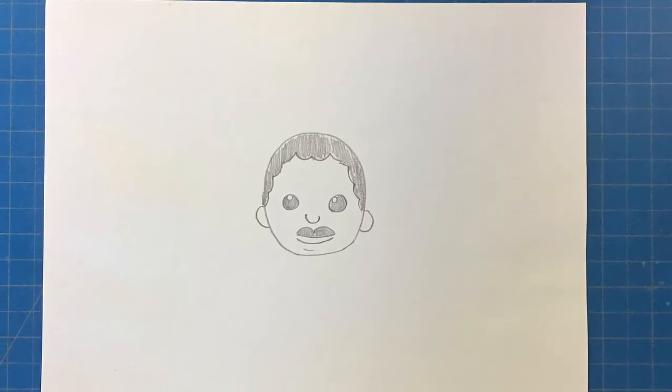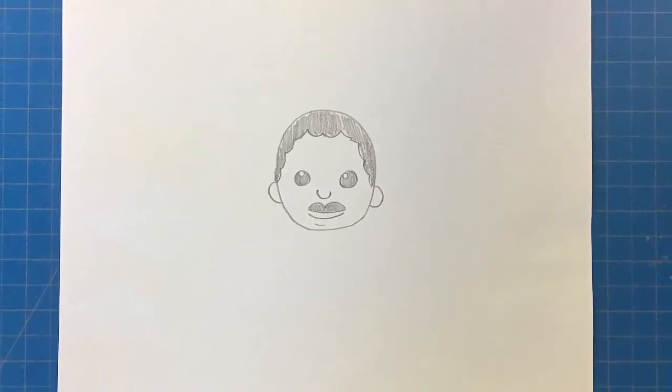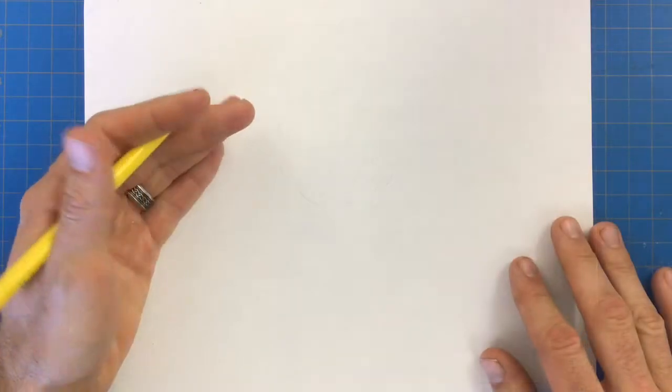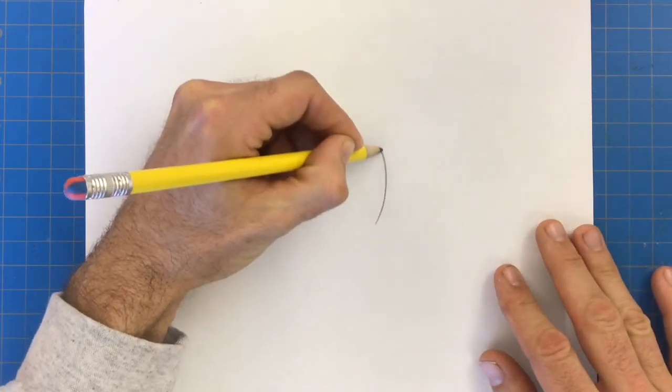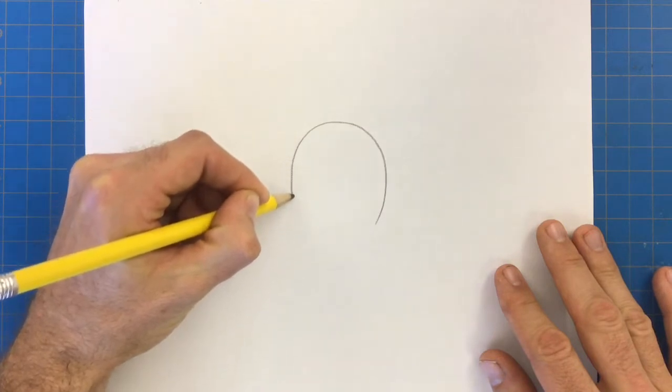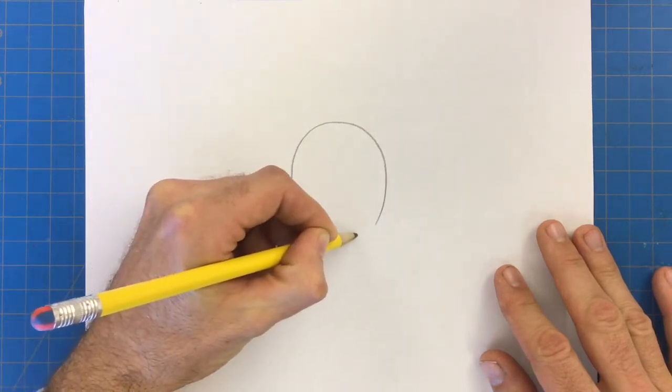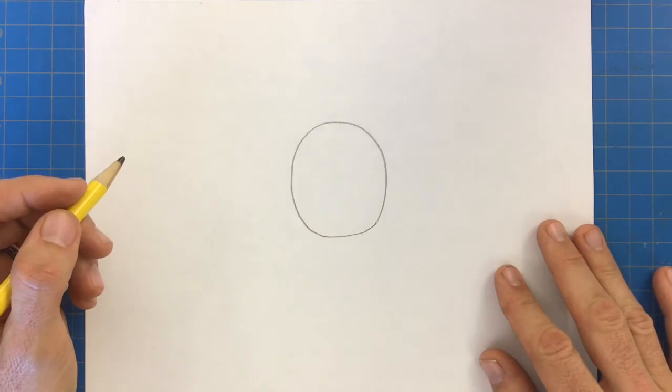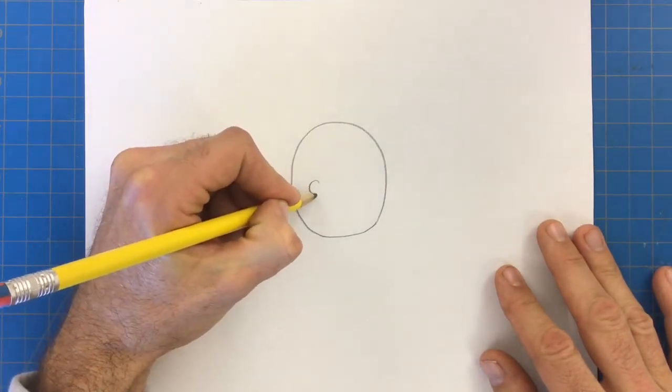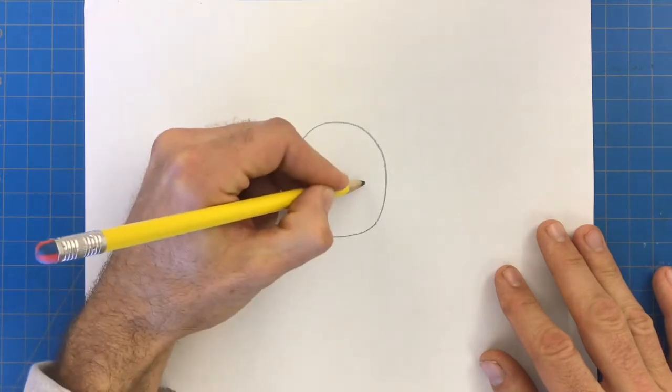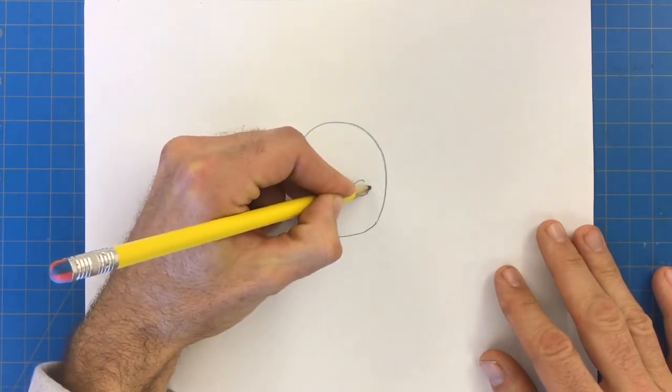I'm going to start by drawing the face first of Dr. King. I'm going to start in the middle of my paper. So I'm going to start with a kind of circle shape. There we go, just like in the book. Next, I'm going to use two more circles for the eyes. I'm going to leave a little bit of space in between my circles. There we go.